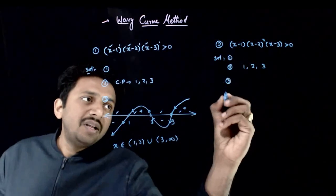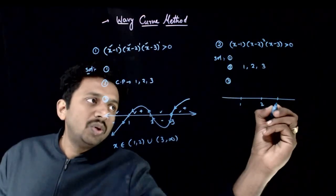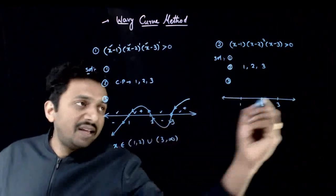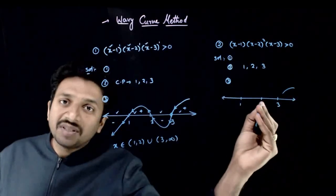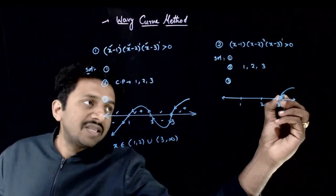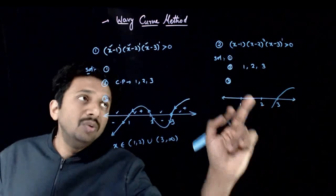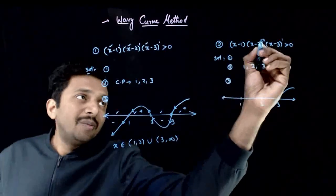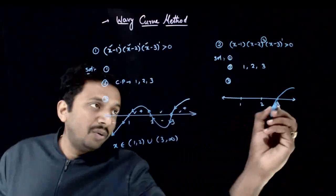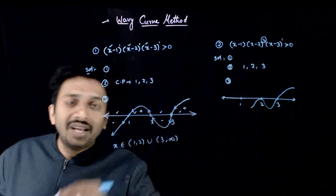Let us go to the third step and draw the wavy curve. We identify 1, 2, 3 on the number line. Starting from above the real number line, what happens at x = 3? The power of x minus 3 is odd, so a sign change happens at x = 3. What happens at x = 2? The power of x minus 2 is even, which means the sign does not change at x = 2 — the curve coming from the negative side again goes to the negative side.